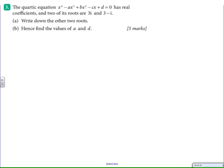They tend to ask questions that require you to know this. In this specific instance, they give you a quartic equation that has real coefficients and two of its roots are 3i and 3 minus i. Write down the other two roots, and find the values of a and d. The things we're trying to find emerge when we do the sum and product of the roots.